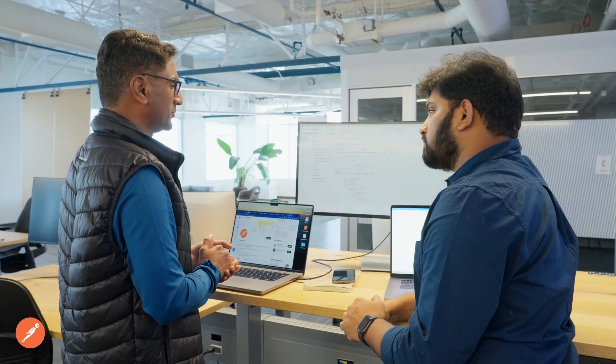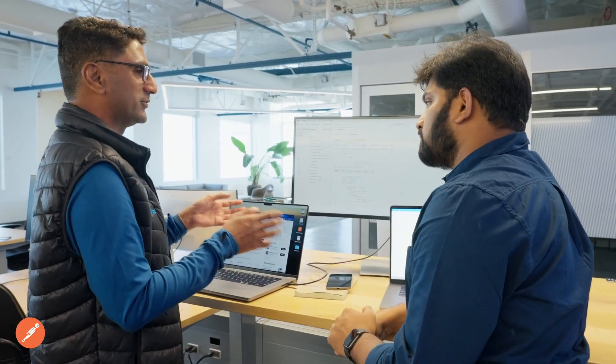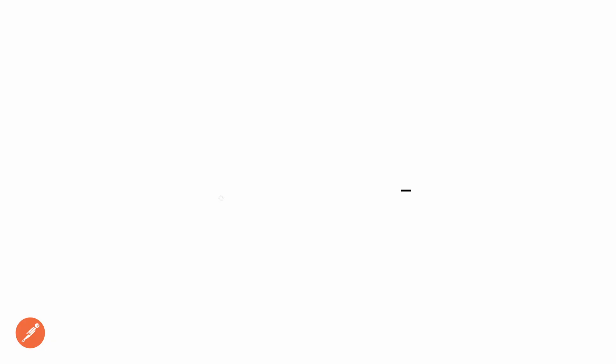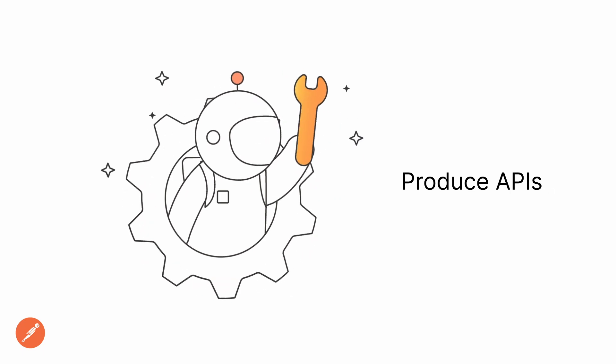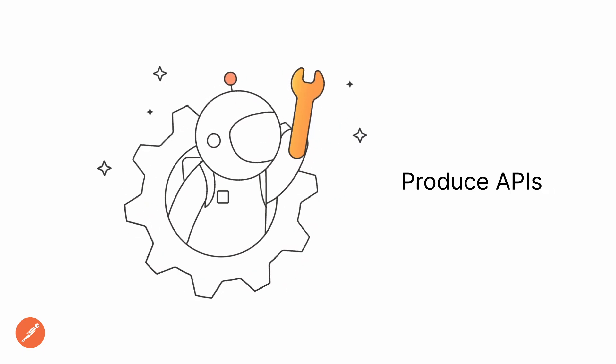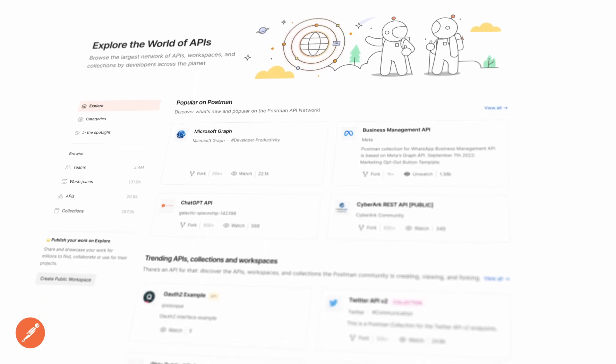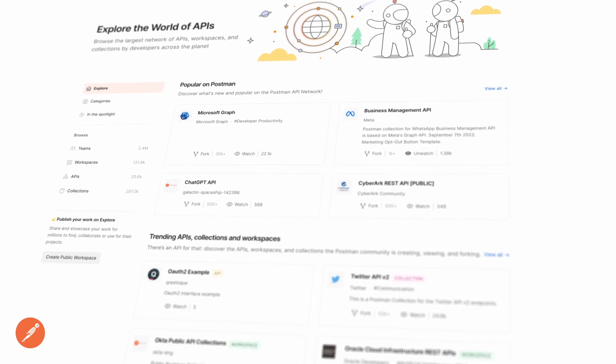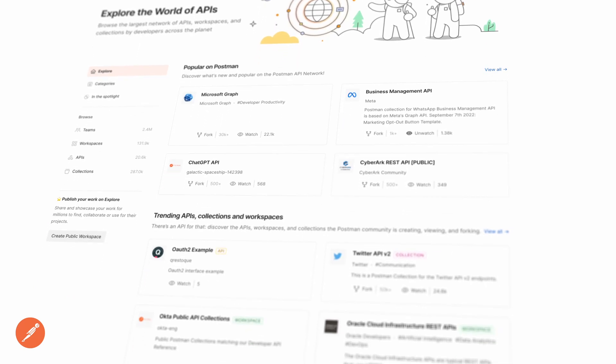We use Postman in two different ways. Internally, we use Postman to be able to produce APIs, but we also want to offer our products and services to the developers outside of PayPal, for which we use Postman's public network.